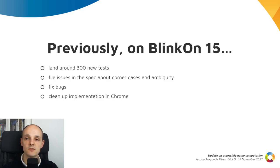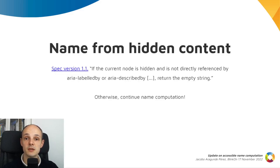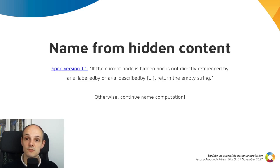It's a case of ambiguity in the wording, and it's about naming from hidden content. The main use case for naming from hidden content is tooltips, like the ones you can see here. It's supported by the spec, and it says that if a node is hidden but it's directly referenced by aria-labelledby or aria-describedby, then it can be used for naming.